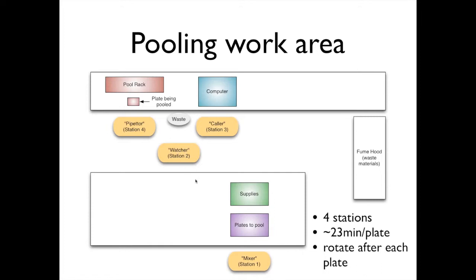Then the mixed plate moves to the other side of the bench and advances to a position next to our pooling rack. We have a person called a pipetter, which we call station 4. A person rotates from these stations: Station 1, 2, 3, 4. The pipetter sits at station 4 and does the actual pipetting from the source plate into the target pool receptacle tubes.